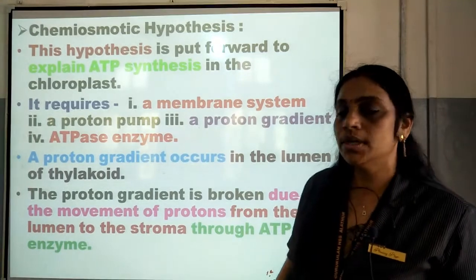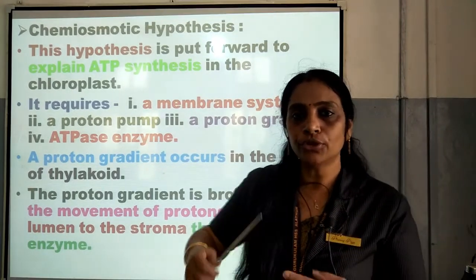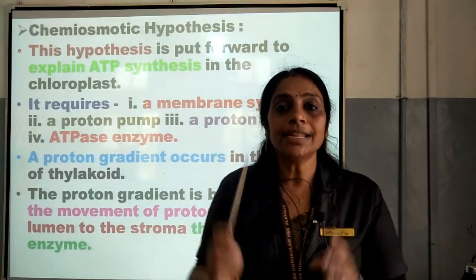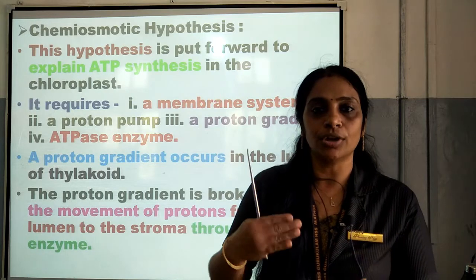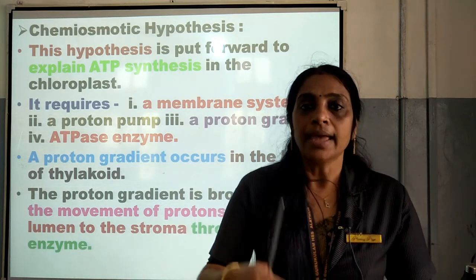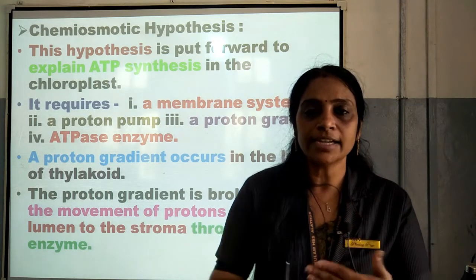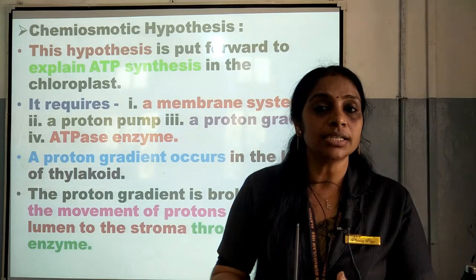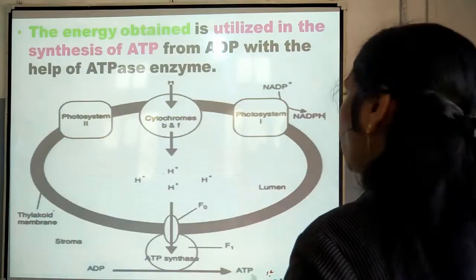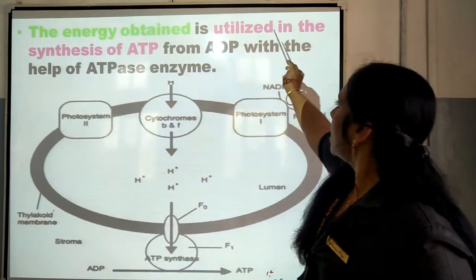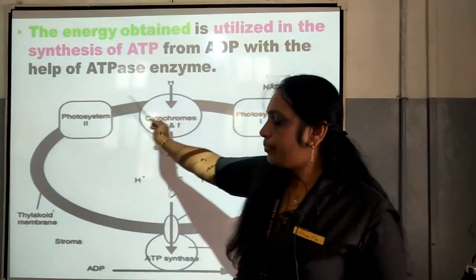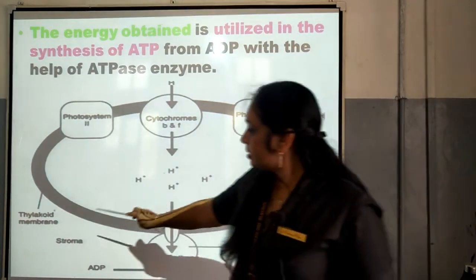The proton gradient is broken by the movement of protons from the thylakoid lumen to the stroma, taking place through ATPase enzyme. ATPase enzyme helps for the transportation of protons or H+ ions from the lumen of the thylakoid to the stroma. Because of the movement of this proton through ATPase enzyme, a lump sum amount of energy is released, and that energy is utilized for the synthesis of ATP. The energy is utilized in the synthesis of ATP from ADP with the help of ATPase enzyme. This is the chloroplast.